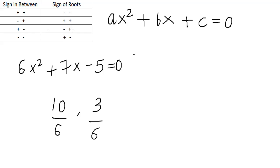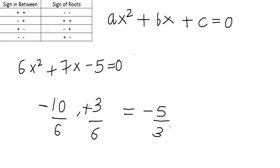As I said, in the plus-minus case, the negative sign will be with the root which has a greater modulus value. The greater modulus value is 10 by 6, so the negative sign will be here and the positive sign will be here. So our final roots will be minus 5 by 3 and 1 half.